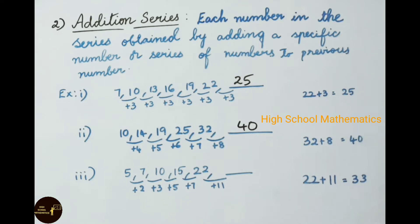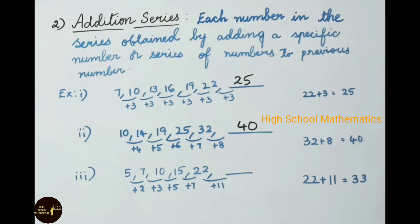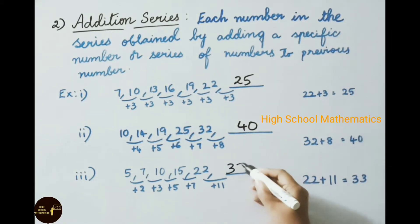See now another example: 5, 7, 10, 15, 22. Here: 5 plus 2 gives 7, 7 plus 3 gives 10, 10 plus 5 gives 15, 15 plus 7 gives 22. Observe these added numbers — they are consecutive prime numbers: 2, 3, 5, 7. So the next term uses plus 11, giving 22 plus 11 equals 33.